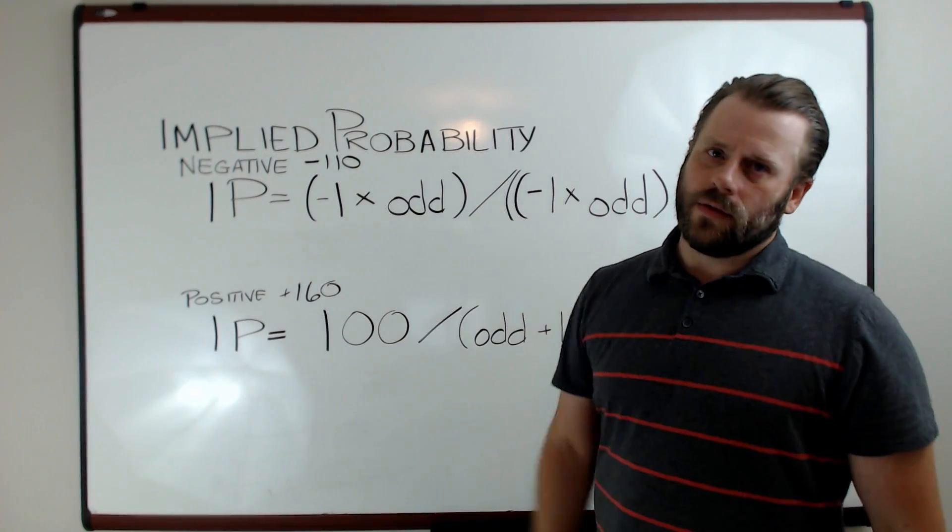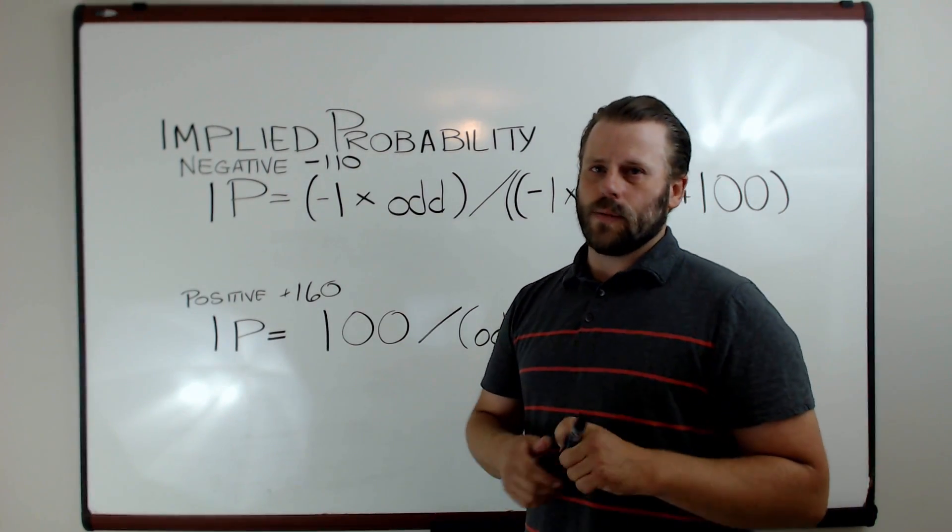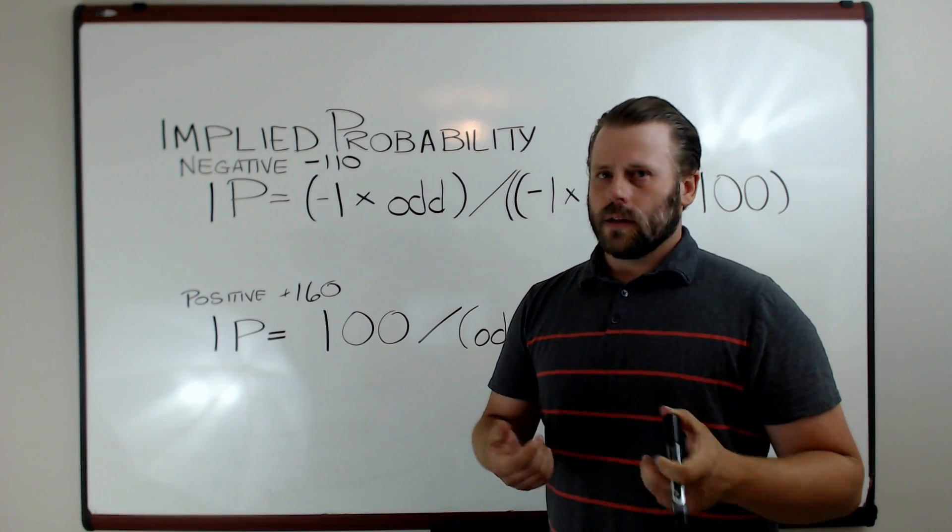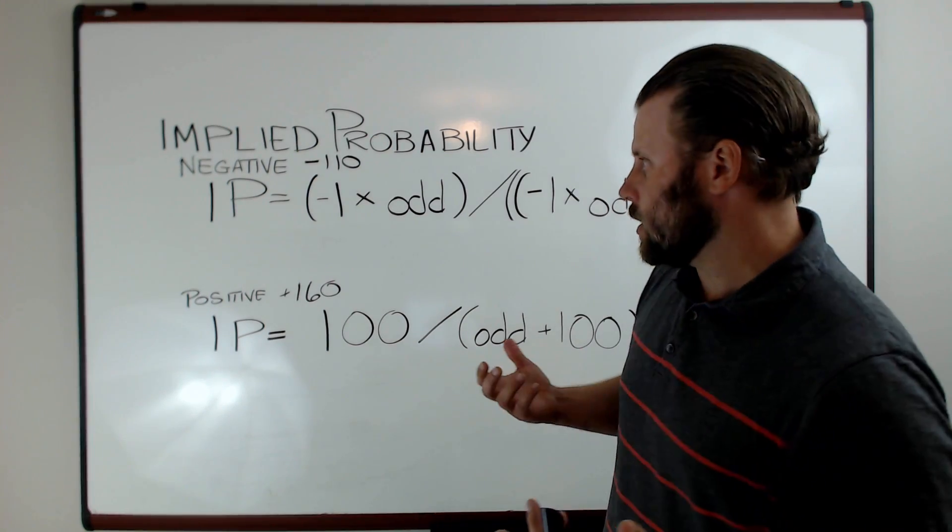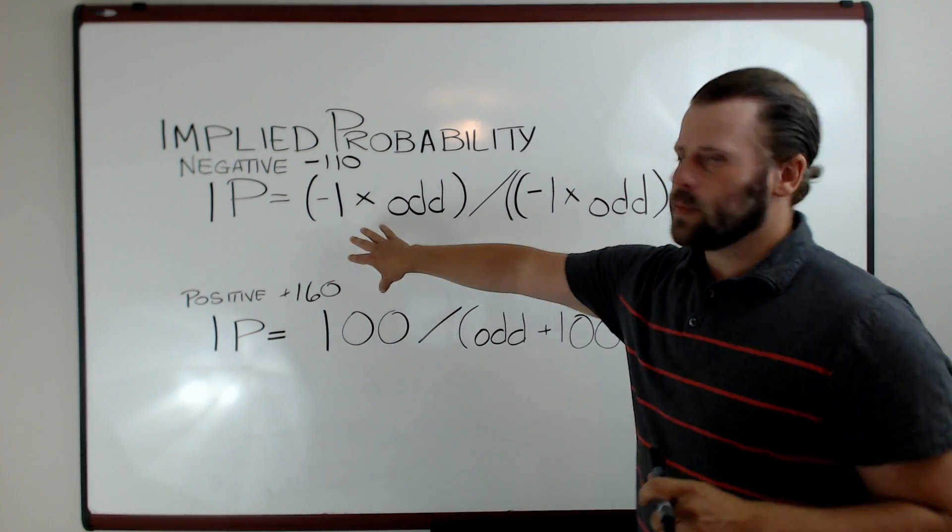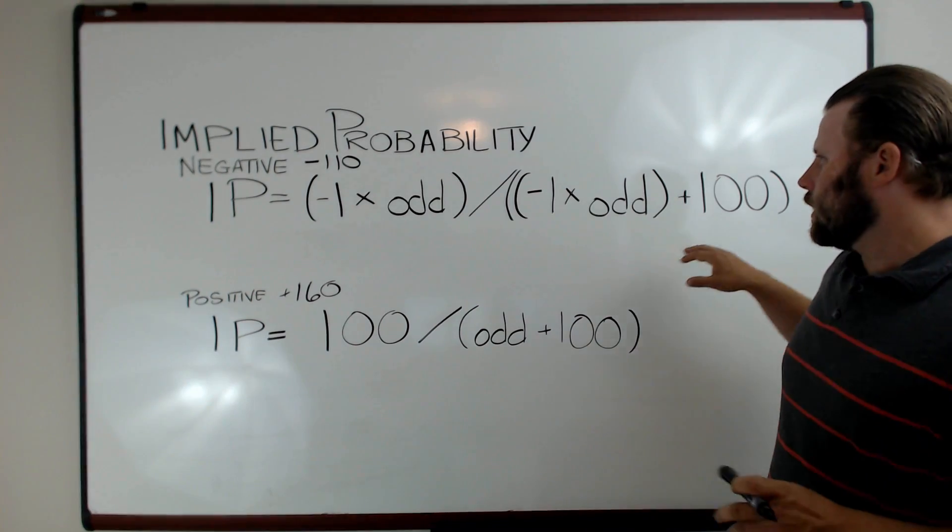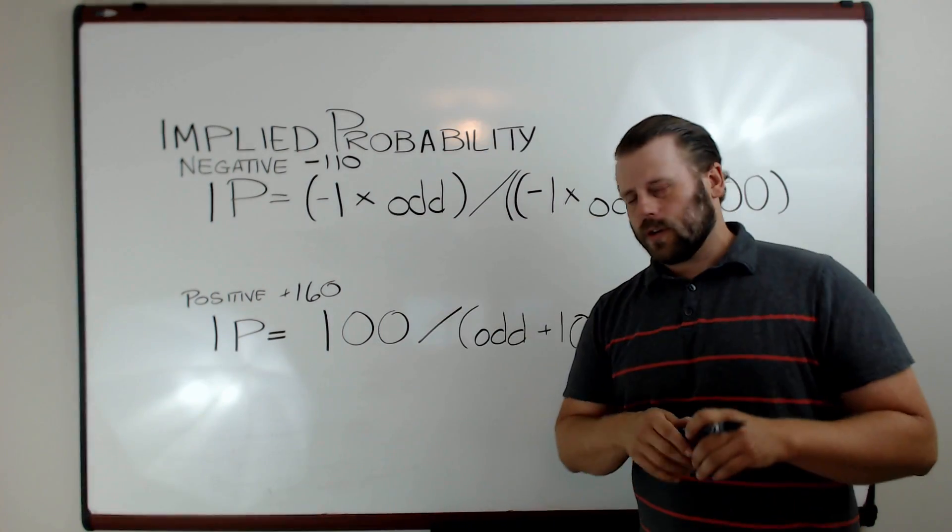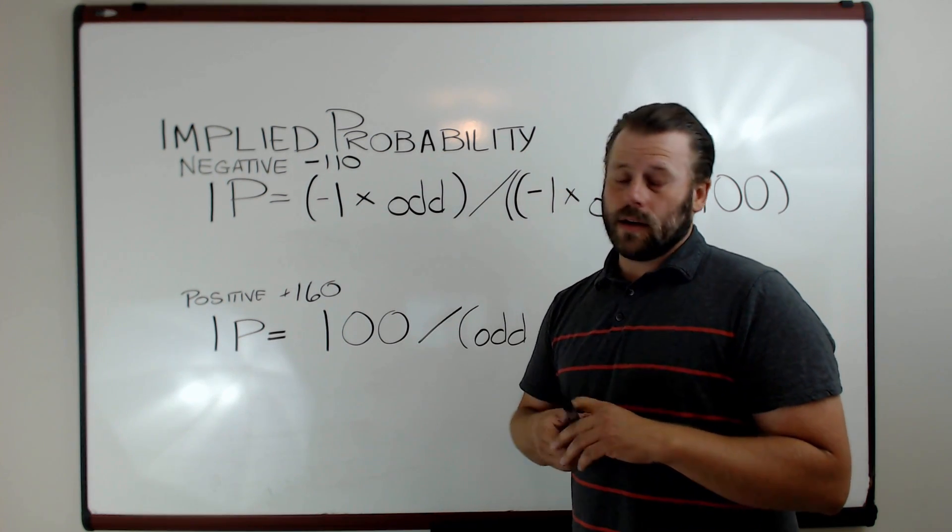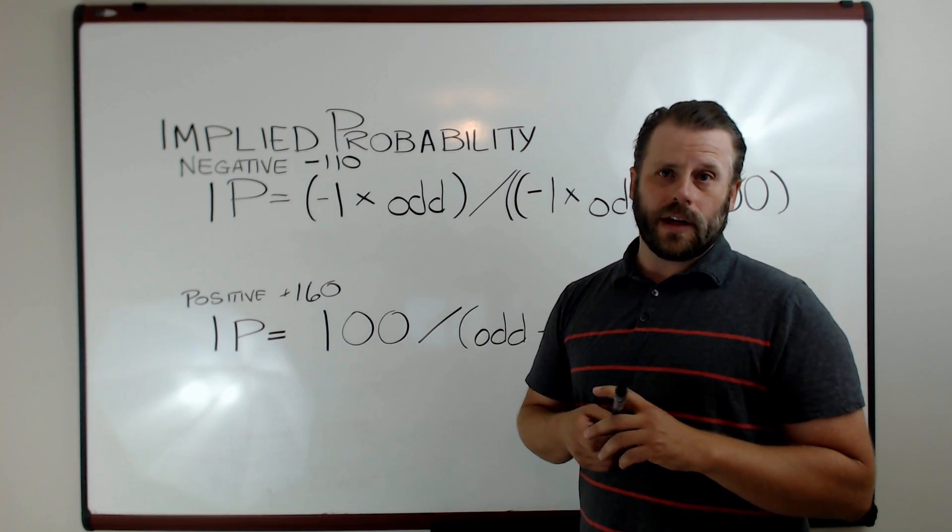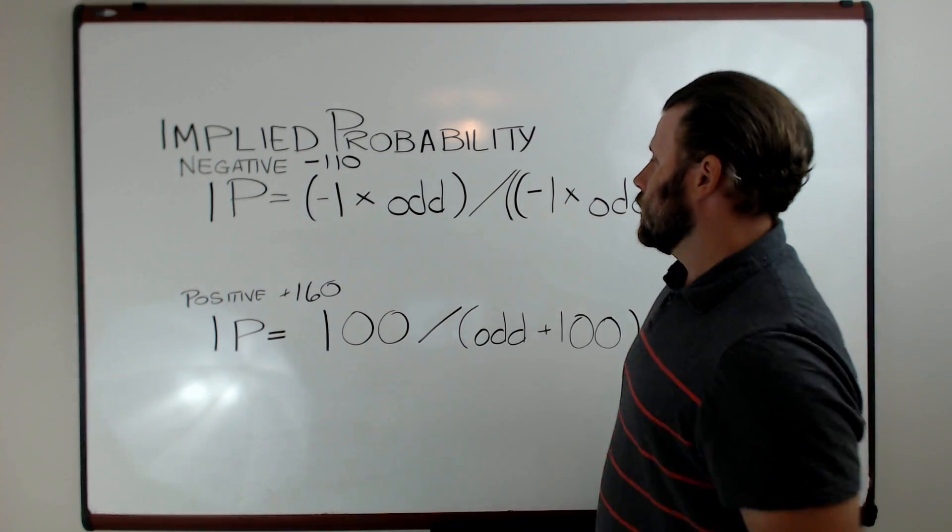We'll start out with negative odds. Negative 110 is the most common odds in sports betting. It's the odds that you're going to get in an against-the-spread bet on either side in general. Now this math may look a little daunting, but if you remember back to your 12th grade math, multiplying negative 1 by a negative number essentially just makes it positive.